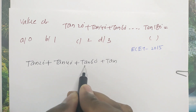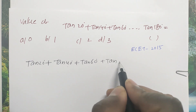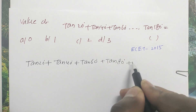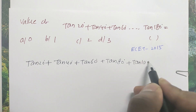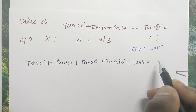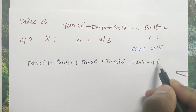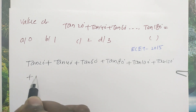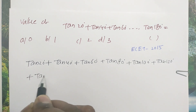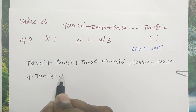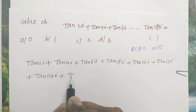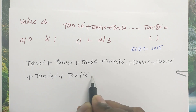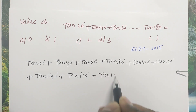Tan 20 degrees plus tan 40 degrees plus tan 80 degrees, then tan of 100 degrees plus tan of 120 degrees plus tan of 140 degrees plus tan of 160 degrees plus tan of 180 degrees.